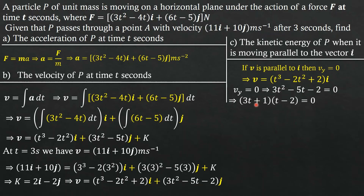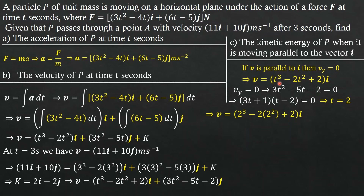Factorizing 3T² − 5T − 2 = 0, we get (3T + 1)(T − 2) = 0. This gives T = −1/3 or T = 2. Since we are dealing with time, which must be positive, we take T = 2 seconds. Substituting T = 2 into the i-component: 2³ − 2(2²) + 2 = 8 − 8 + 2 = 2. So the velocity is 2i meters per second.